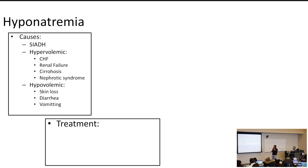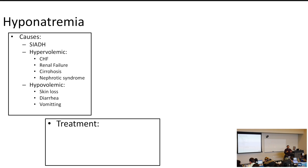You can also get hypovolemic hyponatremia, where you're losing both water and sodium — for example, in skin loss, diarrhea, and vomiting. It's all about the clinical context. For your USMLE, they're pretty obvious about what they want you to know about hypo- or hypernatremia.